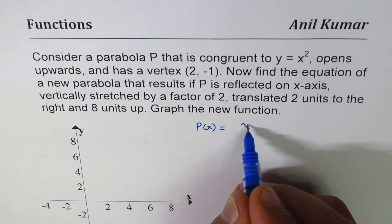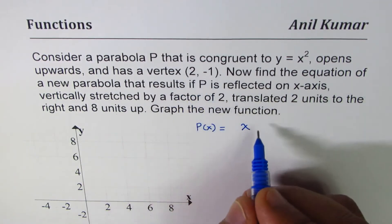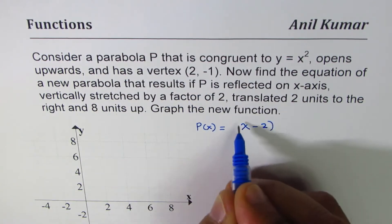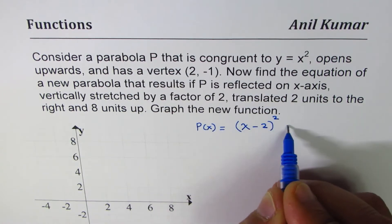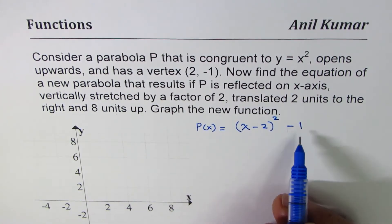Opens upwards and has a vertex (2, -1). So we can write this equation in the vertex form, which is (x - 2)² - 1. So that is the parabola given to us.